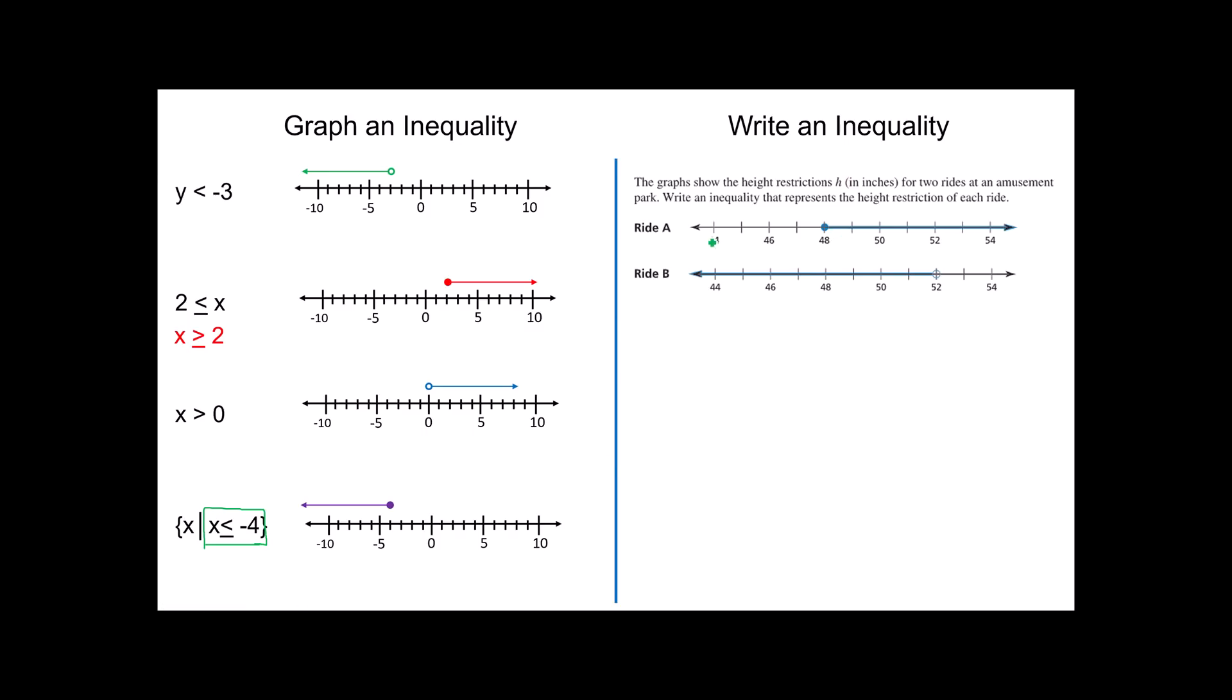Knowing that, we should be able to look at pictures like this. Ride A and Ride B, which are ride restrictions at an amusement park. And we should be able to take the inequalities graph, and we should be able to write the inequality based on that graph. If you think you can do that, pause the video, try it, and then turn it back on and see if you're right. If you're not sure, let's do this together. Notice, I need things that are bigger than 48. That's things to the right. But 48 is also included. I want Ride A to be everyone greater than or equal to 48. Ride B wants things that are smaller, or people that are smaller than 52. But notice, we are not including the 52. 52 does not fit into this group. B is less than 52.